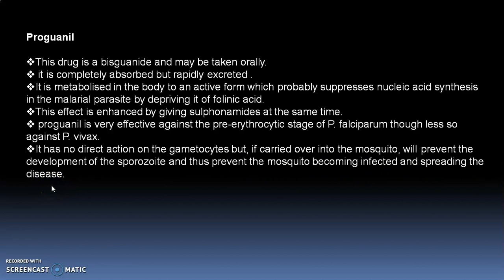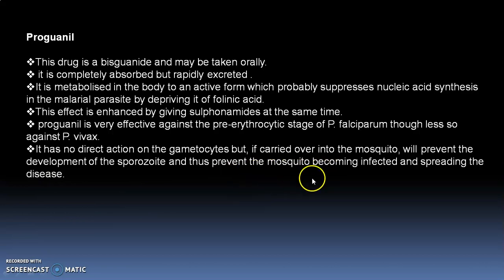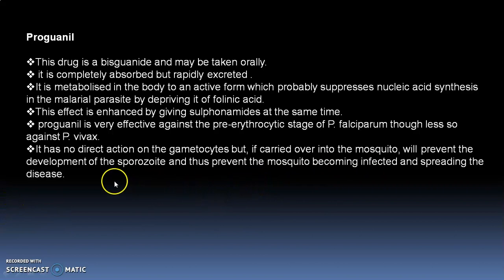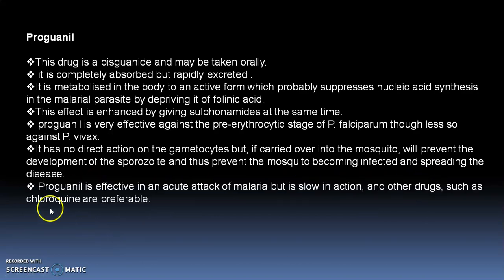Whenever we give proguanil, it has no action on the gametocytes if gametocytes are formed. But it will help prevent the spreading of malaria, because whenever a female Anopheles mosquito bites an infected person who is given proguanil, the malaria is not spread to another person. Proguanil is effective in the acute attack of malaria, but it is slow in action, and other drugs such as chloroquine are preferable.